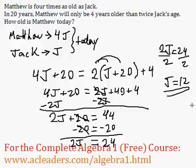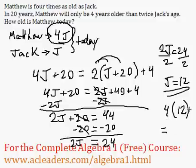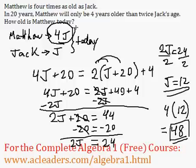So Jack's age today is 12. The question was: how old is Matthew today? And Matthew's age is represented by 4J. So 4J is 4 times 12, because J is 12. So Matthew's age will be 4 times 12, which is 48. Matthew is 48 years old today.